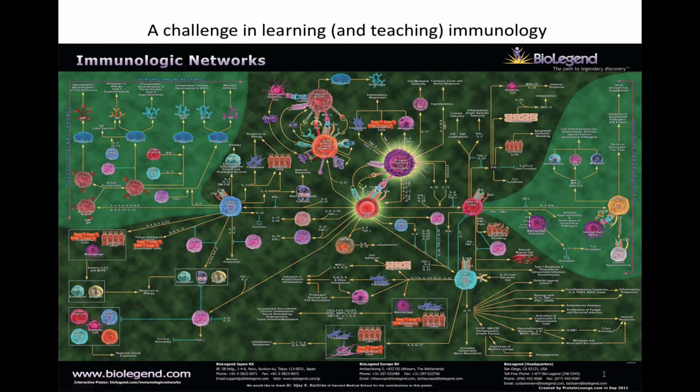We're depicting the big picture — the immune system, all the different cells working together. We talked last time about one way we can subdivide the immune system to help us make sense of this whole mess, which is subdividing into barrier organs, the innate immune system, and the adaptive immune system. Today we're going to talk about some other types of subdivisions.